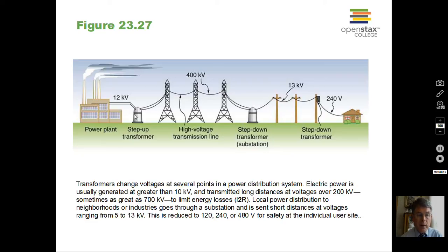So the step up transformer increases the voltage on these wires and decreases the current. Again I times V is our power. So with 12 kilovolts there will be a certain current. If we change this to 400 kilovolts, now the current decreases by a factor of 12 divided by 400. So we get a lower current on these long distance lines and we don't waste as much energy.